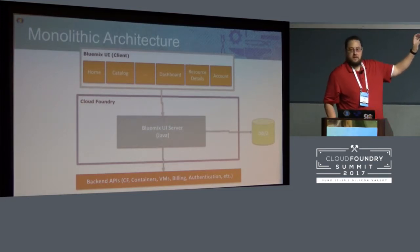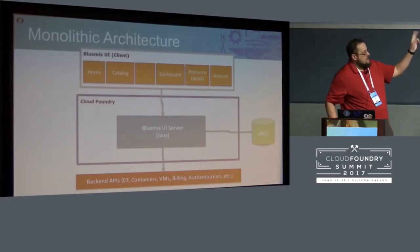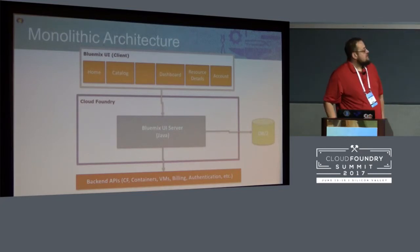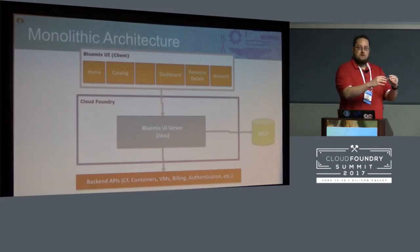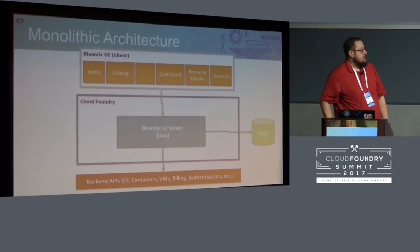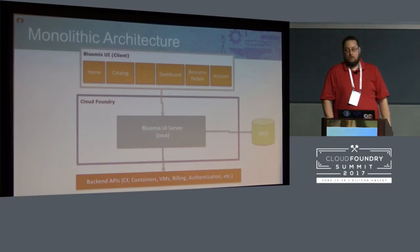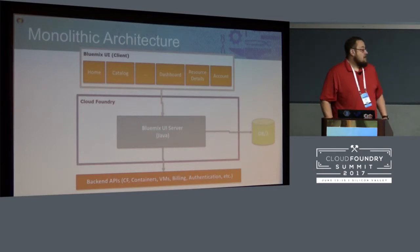The top where it says Bluemix UI or client is basically the web browser, and the orange boxes there roughly correspond to the pages I showed on the previous slide. That's really all the JavaScript logic out on the browser in our single page app. On the back end, the Cloud Foundry side, we've got a single UI server, which is Java. It was bound to a DB2 service for some data persistence, and basically passed through to a whole lot of back end APIs, including Cloud Foundry, the Cloud Controller, UAA, etc.